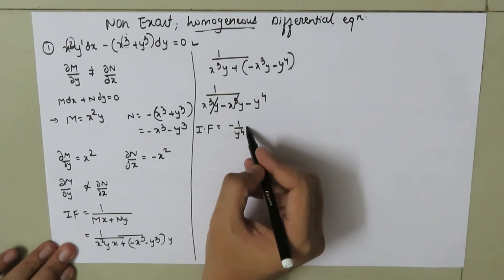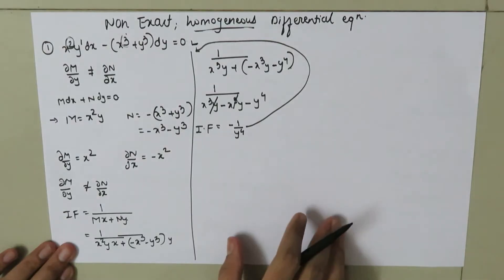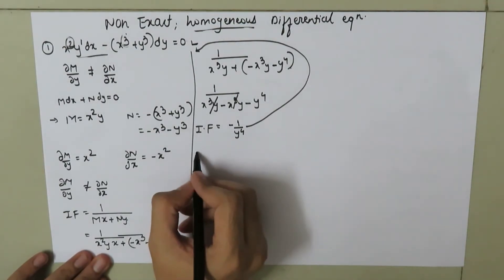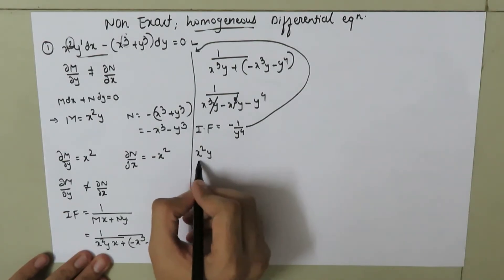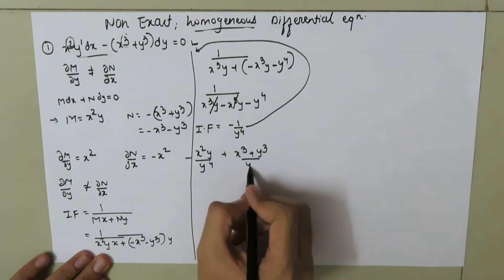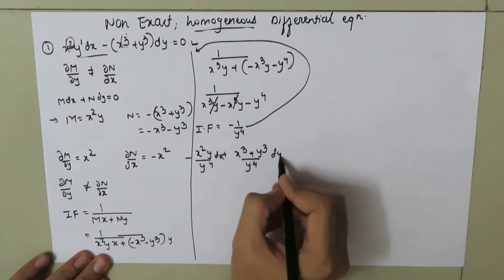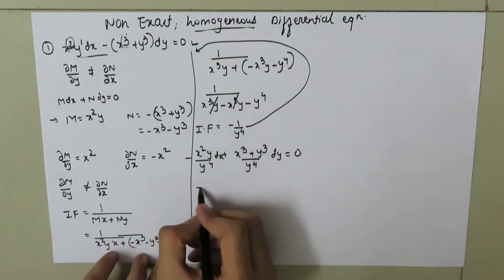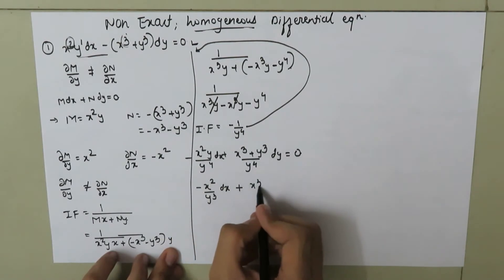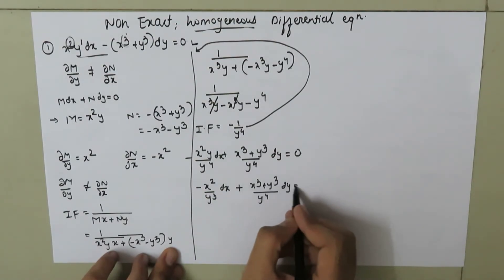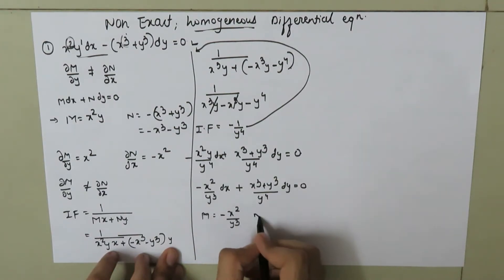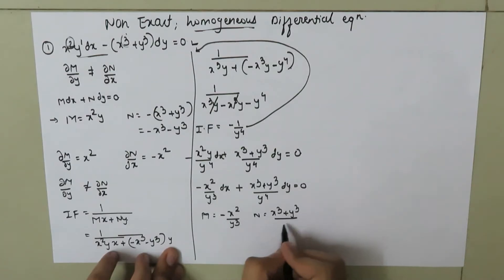When we multiply this integrating factor with the given differential equation, it will turn into an exact differential equation. Multiplying through, we get: negative x squared over y to the power 3, dx, plus (x cubed plus y cubed) over y to the power 4, dy, equals 0. So the new M is negative x squared over y cubed, and the new N is (x cubed plus y cubed) over y to the power 4.